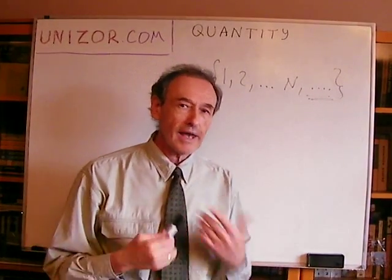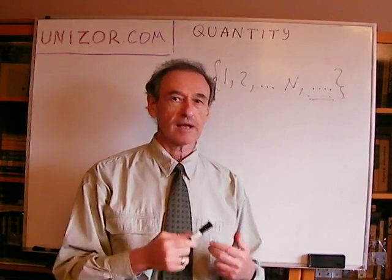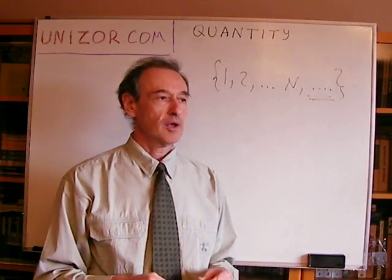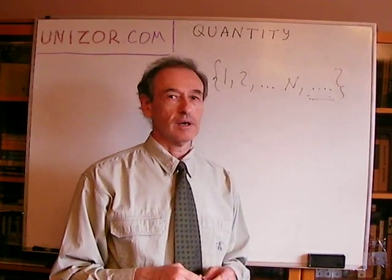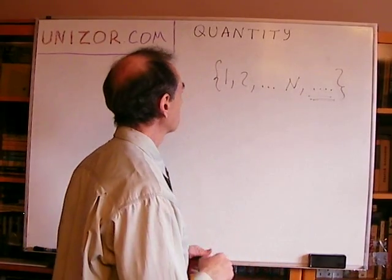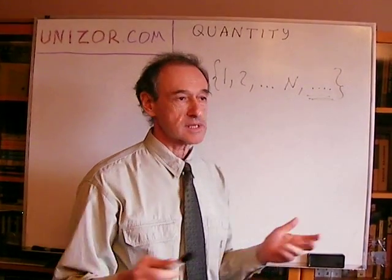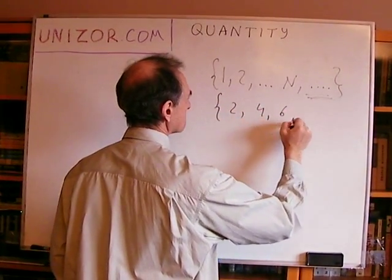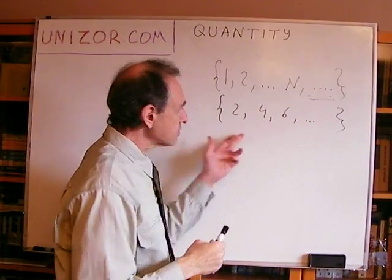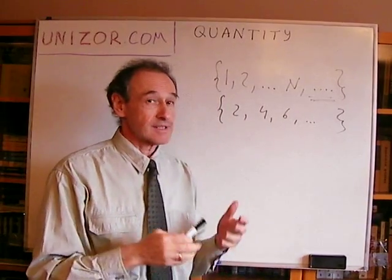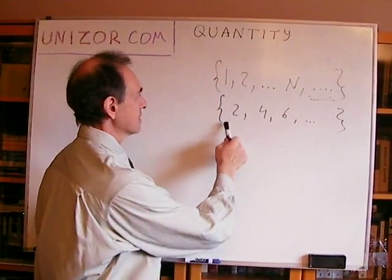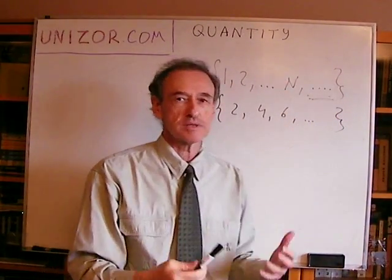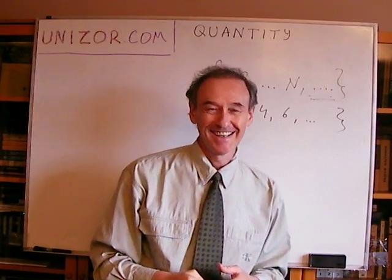We would like to compare infinite sets in exactly the same fashion we compared finite sets, which is one-to-one correspondence. Let's talk about another infinite set: natural numbers, but not all of them — only the even ones. So it's 2, 4, 6, et cetera. This is also an infinite set, and it's obviously a subset of the natural numbers, so we took only every second number. So it should be smaller, right? Well, wrong. It's not smaller.